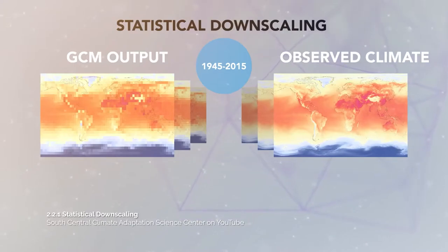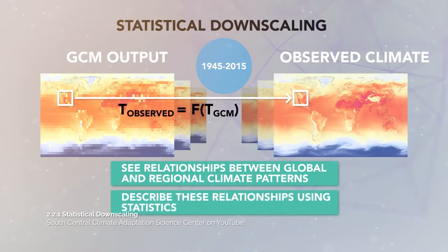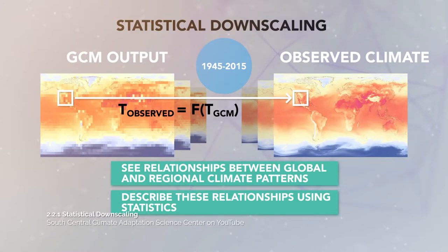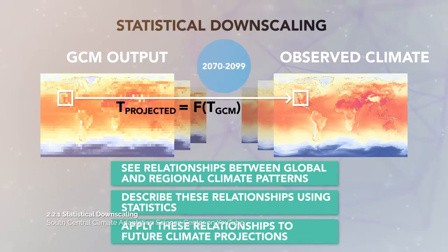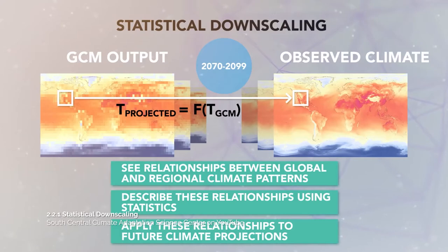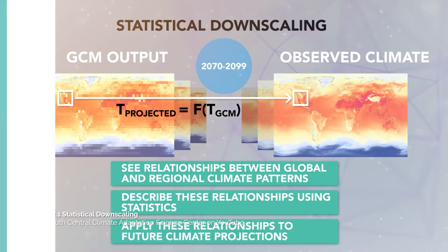This approach is based on the assumption that the statistical relationship established will continue to hold in the future. While there are different ways of building statistical relationships, the simplest is the transfer method, which includes a technique called the delta method. The delta method determines the projected change, or delta, of a climate variable from the GCM and applies it to the observations.